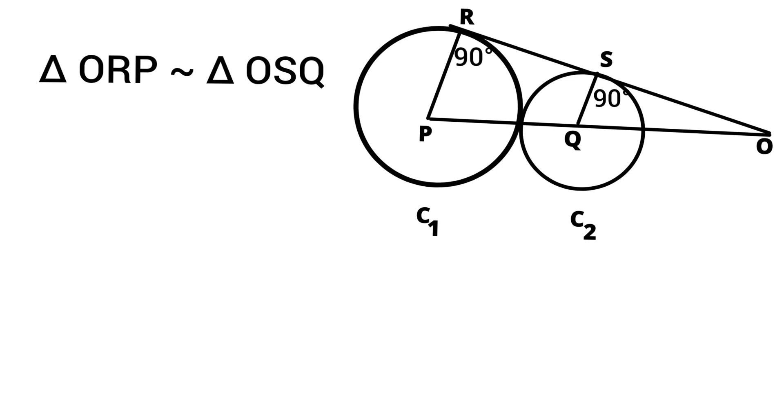So we can write that PR by SQ equals OP by OQ. We know that PR and SQ are the radii of both circles C1 and C2. It is given that diameters of both circles are in the ratio 4 is to 3. That is, circle 1 and circle 2 ratio is 4 is to 3.